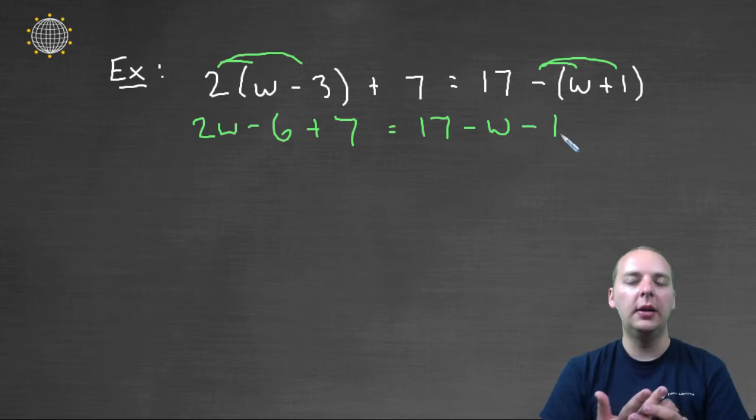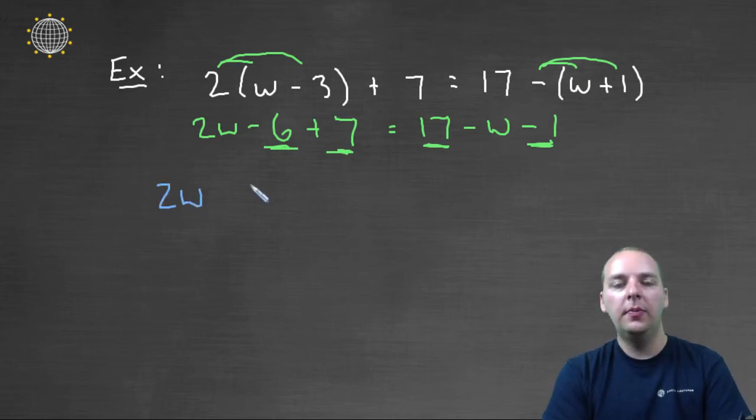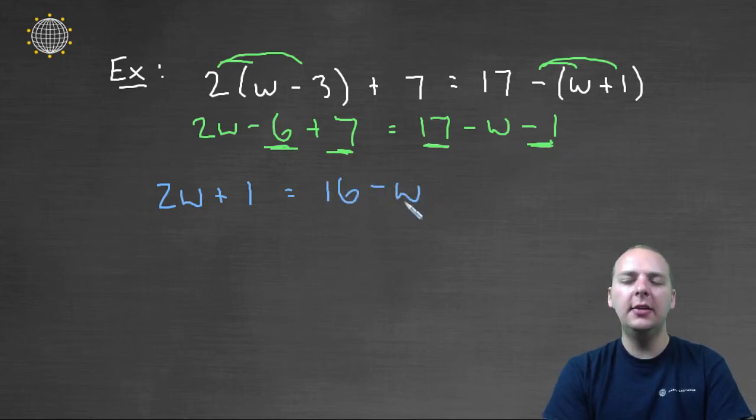So we'd have 2w - 6 + 7 = 17 - w - 1. That's step one. Next, we have to combine any like terms that we see. So I see a -6 and a +7. I see a +17 and a -1. Those are like terms. So we can write 2w - 6 + 7 makes +1. And we'll have 17 - 1 is 16 - w. 16 and w are not like terms. They cannot be combined. 2w and 1 are not like terms. So I think we're done with that step.